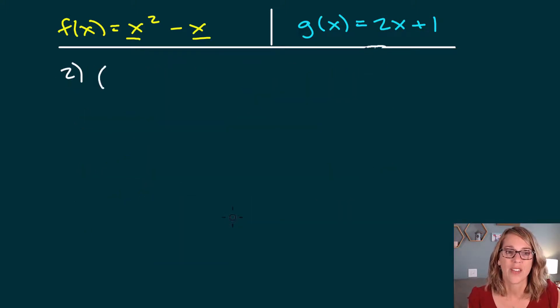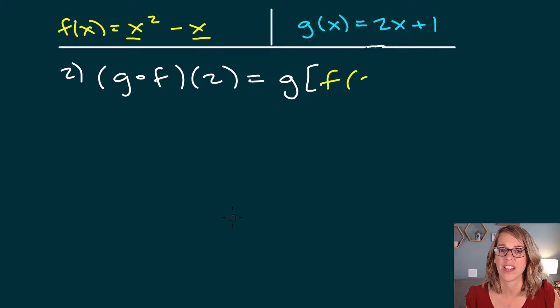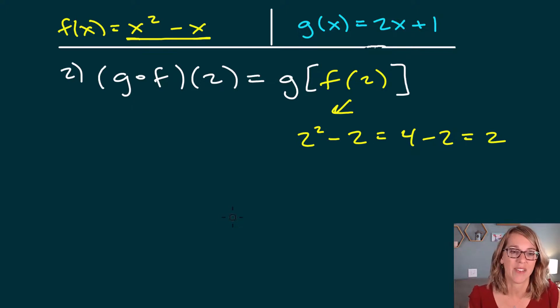For the second one, let's evaluate it at a point. So let's do g composed with f of 2. So I know as I'm rewriting this, I've got g on the outside. On the inside, I need to evaluate f of 2. So that's going to be an f of 2. Let's go ahead and evaluate f of 2. Using my rule, it's going to be x squared minus x. So it's going to be 2 squared minus 2. That is 4 minus 2 or 2. Let's put that back inside of our function. So we get g of 2.